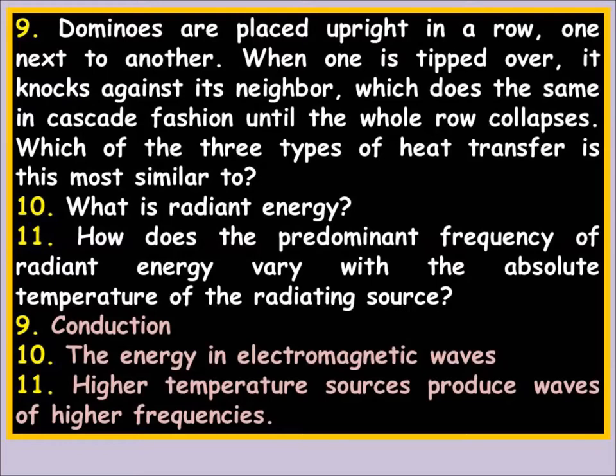What is radiant energy? Radiant energy is specifically and only electromagnetic radiation. The sun heats the Earth through electromagnetic radiation — light, infrared, ultraviolet, visible light. These are all forms of radiation.